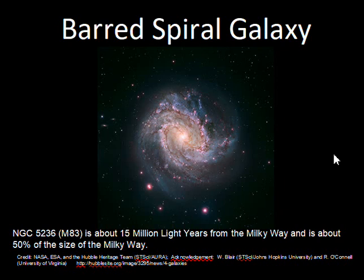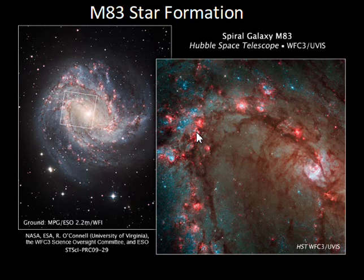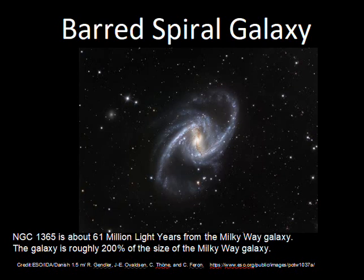NGC 5236, also known as M83 in the Messier Catalog. A closer Hubble Telescope view of star formation in M83 shows that in these spiral arms, where the density of cold gas and dust goes up, we can have a gravitational collapse and star forming. Those new stars — some of them very hot — emit a lot of ultraviolet light to energize the hydrogen clouds.